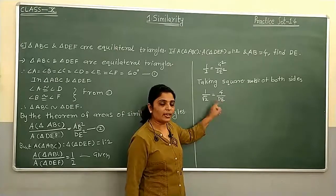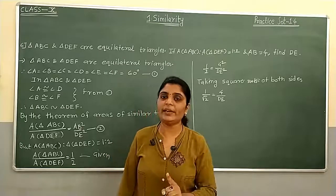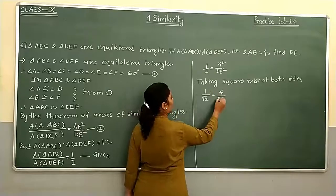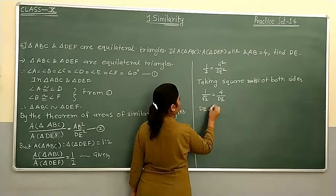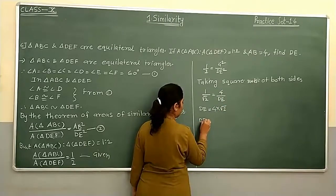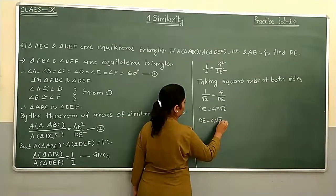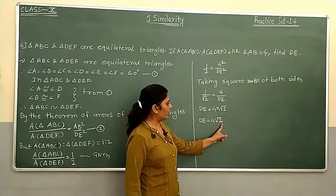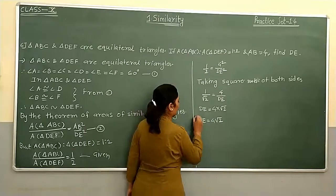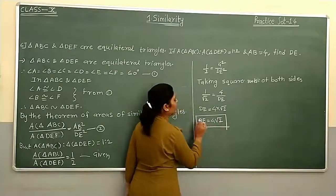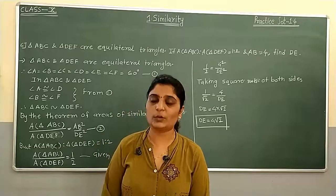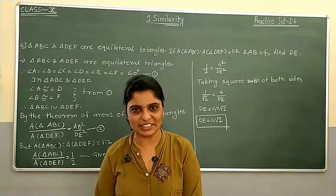DE is in the denominator, so we bring it to the numerator by cross multiplying. 1 into DE equals 4 into root 2. Therefore DE equals 4 root 2. Since 4 is outside the root and root 2 is inside, they cannot be multiplied further. So DE equals 4 root 2. I hope you understood this sum very well.